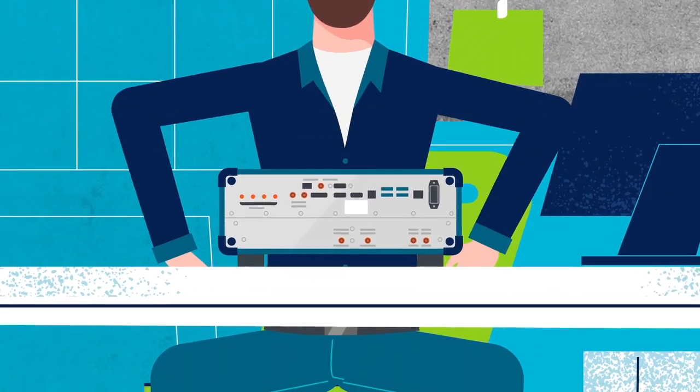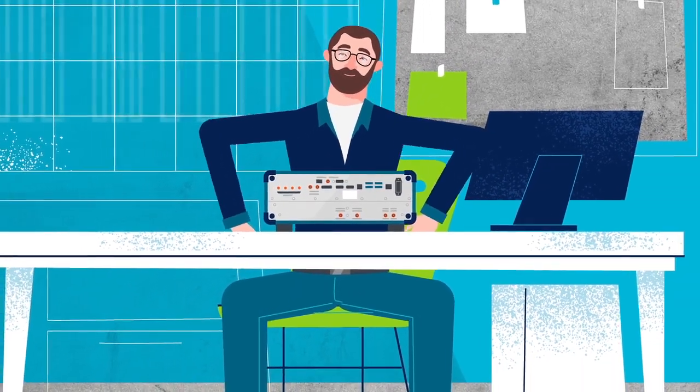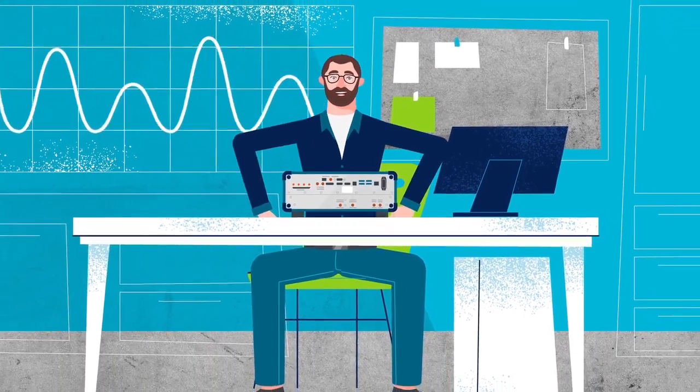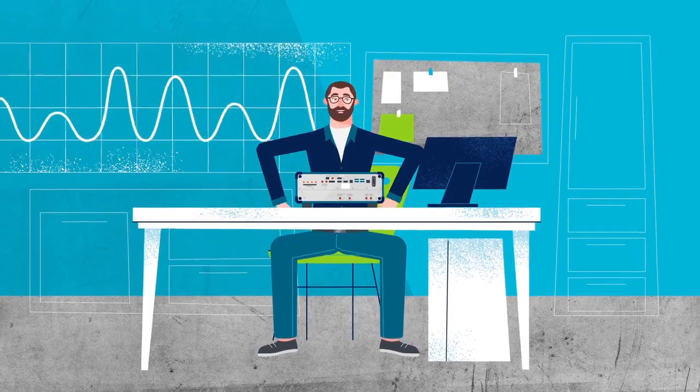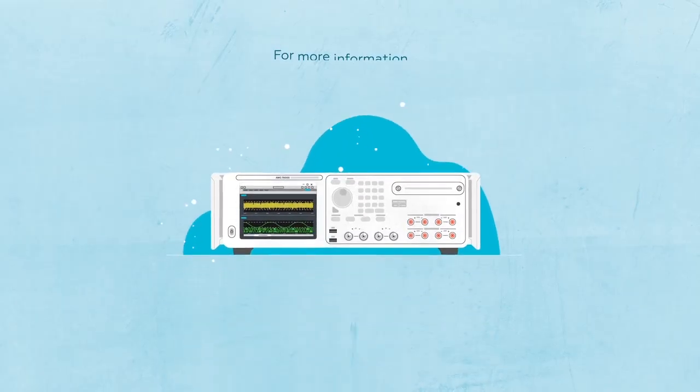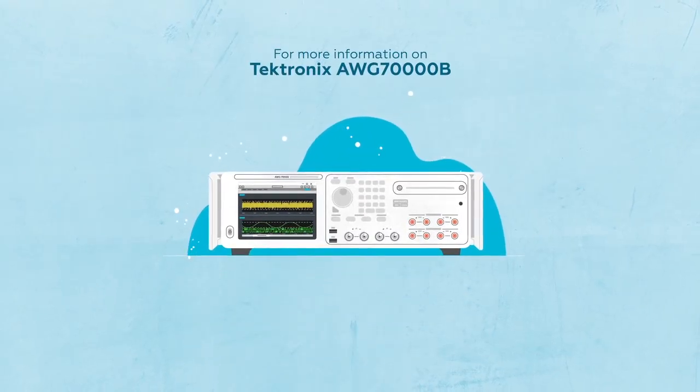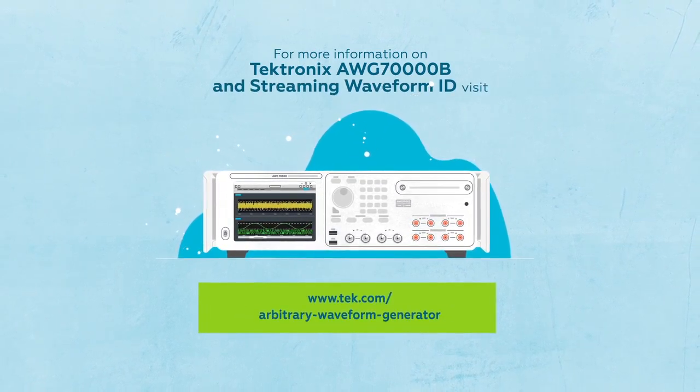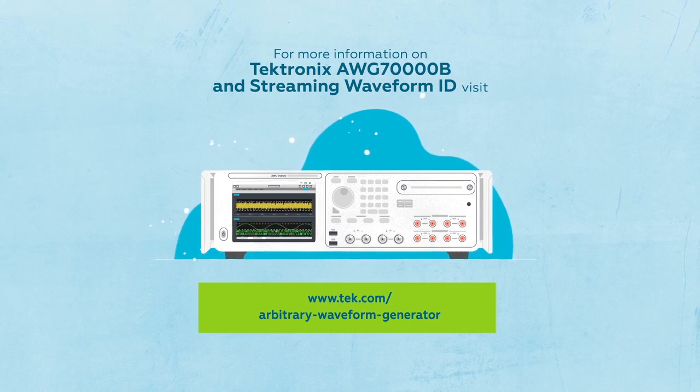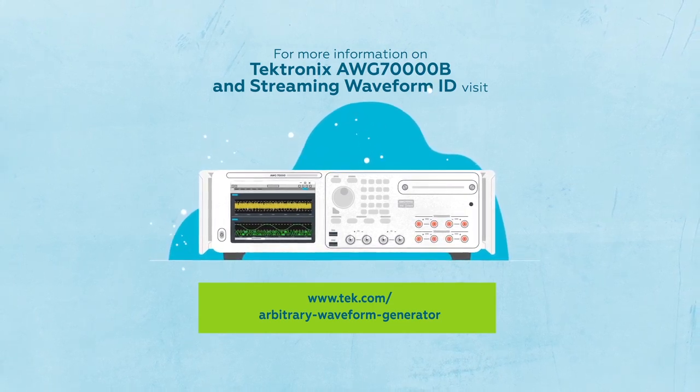The AWG-70,000B with Streaming Waveform ID gives you the ability to create complex, dynamic sequences to quickly simulate modern threats and test your system. For more information on Tektronix AWG-70,000B and Streaming Waveform ID, visit www.tech.com/arbitrary-dash-waveform-dash-generator.